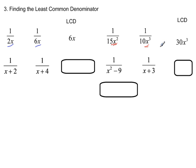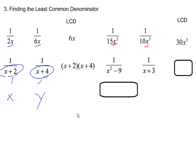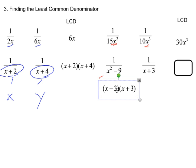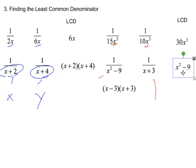For denominators (x plus 2) and (x plus 4), think of each as a whole unit — like x and y — so the least common denominator is (x plus 2) times (x plus 4). Whenever you have a quadratic in the denominator, always factor it first. You should recognize x squared minus 9 as the difference of two squares, which factors into (x minus 3)(x plus 3), giving a least common denominator of x squared minus 9.